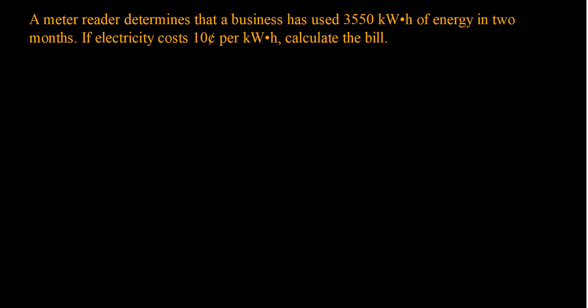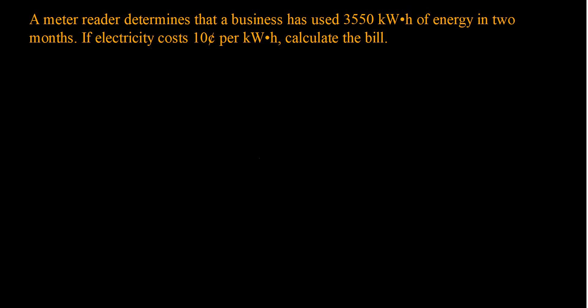Hello again. In this video I will be discussing three examples related to the cost and how we calculate the cost of consumed energy. In the first example, a meter reader determines that a business has used 3550 kilowatt hours of energy in two months. If electricity costs 10 cents per kilowatt hour, calculate the bill — how much the owner of this business will pay after two months.